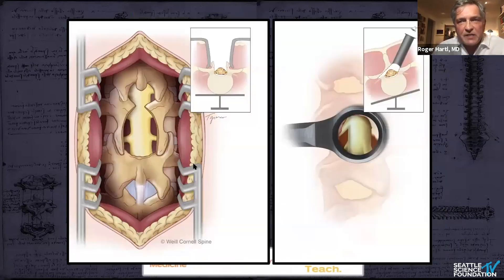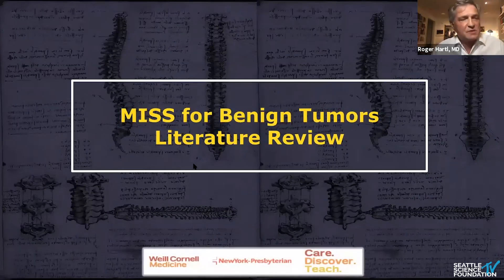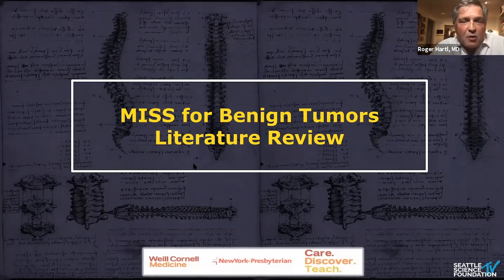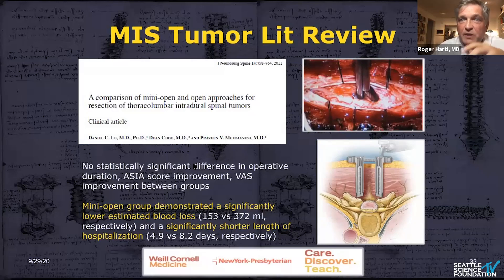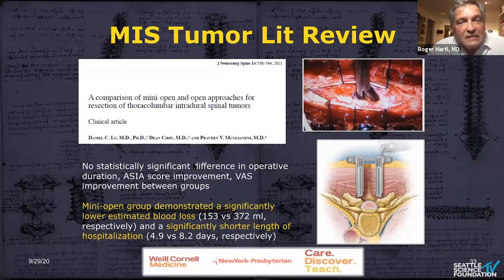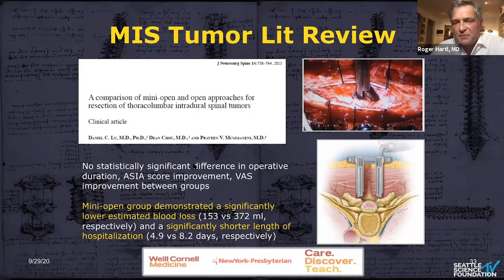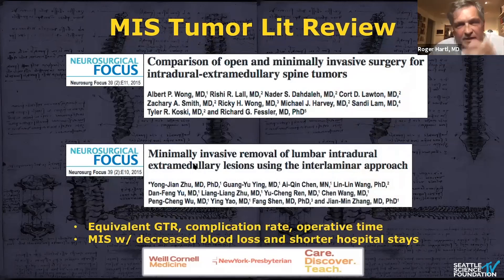Minimally invasive spinal surgery has been described for some of these spinal tumors. There's a paper by Praveen and Dean Chow from about 10 years ago describing a series of patients who underwent MIS decompression and tumor resection. For extramedullary tumors, especially in the lumbar spine, they saw very encouraging results — less blood loss and shorter hospitalization. That's really reflective of a lot of what we've seen with MIS: you cut down on hospitalization length and these patients go back to work earlier with less pain. There are also more recent papers on intradural extramedullary spine tumors treated with less invasive surgery, including cost analysis, demonstrating it is certainly feasible.